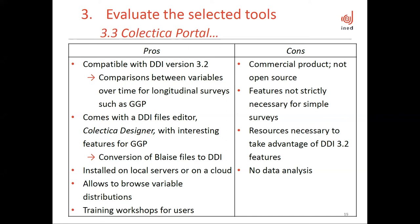Among the disadvantages of Colectica: it is a commercial product; it has features that are not necessarily needed for simple surveys; resources are needed to take advantage of DDI 3.2 to connect variables that can be compared; and resources are also needed to upgrade DDI files coming from Nesta. It does not allow for online data analysis.